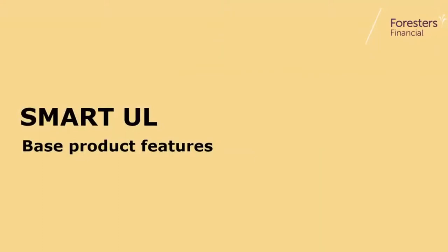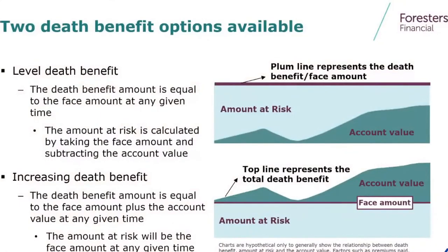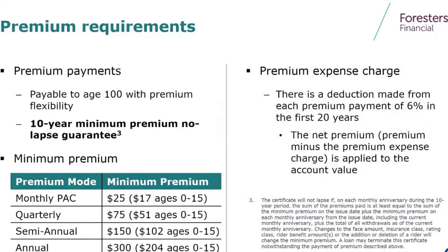Let's look at the base product. It's going to be very simplistic, very normal for what you've seen — a level and increasing death benefit. We do have a 10-year lapse protection guarantee. For those clients that are going to minimum fund this, please keep that in mind, and we'll show you some ways to fund it differently so it will carry much, much longer and give your client that permanent protection they are wanting and needing.